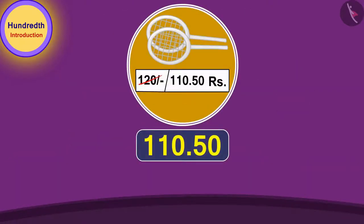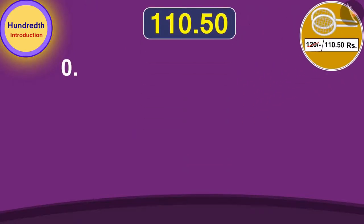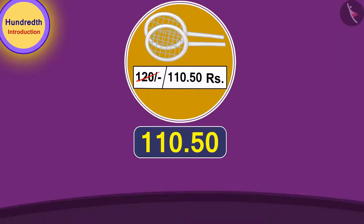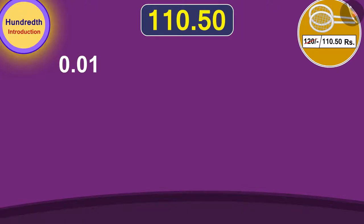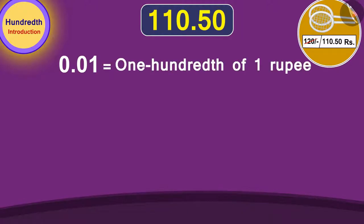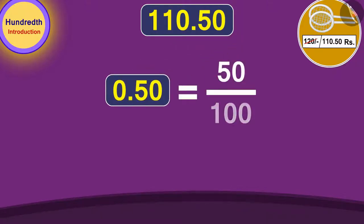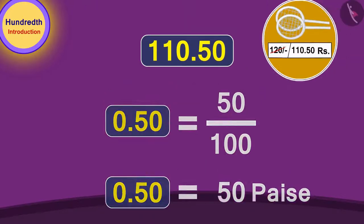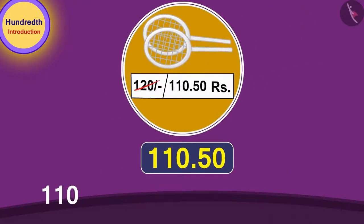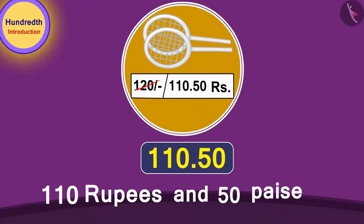We can write one hundredth part of any number using a decimal point as 0.01. The price of a badminton racket is 110.50 rupees. 0.01 rupee or one hundredth of a rupee is equal to 1 paise. Therefore, 0.50 rupees will be equal to 50 hundredth part of 1 rupee or 50 paise. In this way, the price of a badminton racket is 110 rupees and 50 paise.